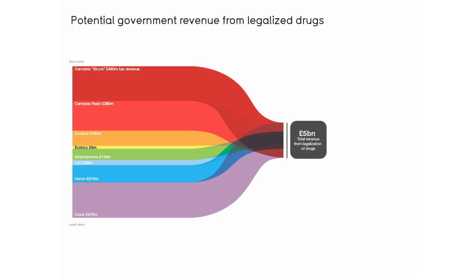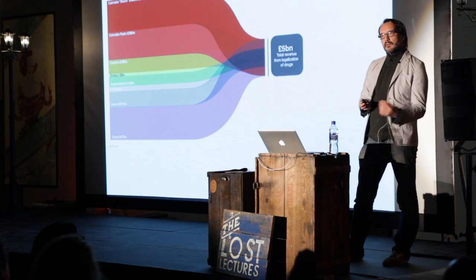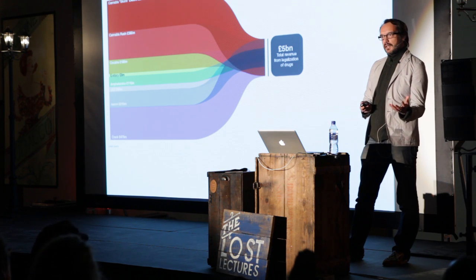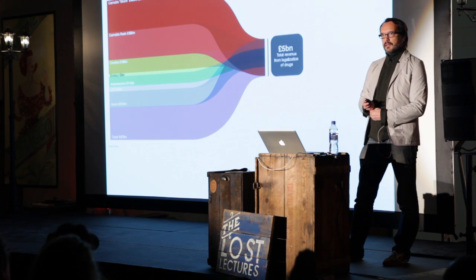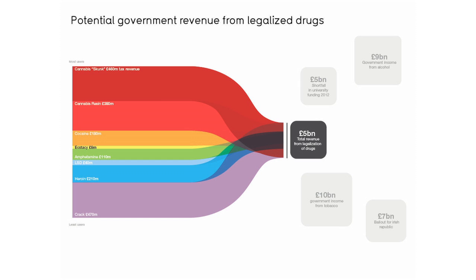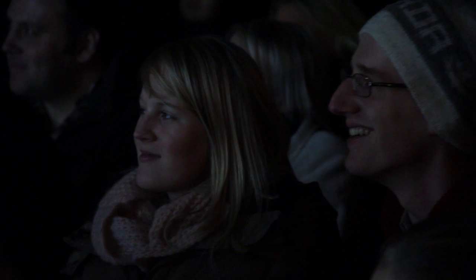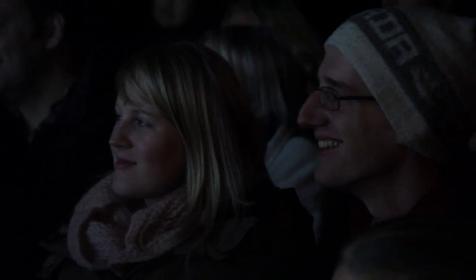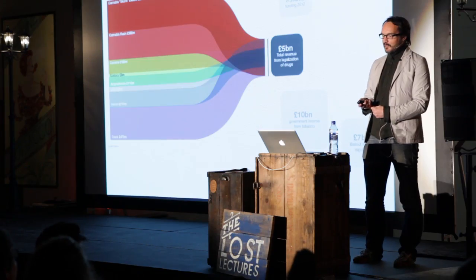If you add all that up, it comes to five billion pounds total revenue — not a small sum. And by a strange coincidence, that corresponds almost exactly to the shortfall in university funding in 2012. Extreme times, maybe extreme measures.